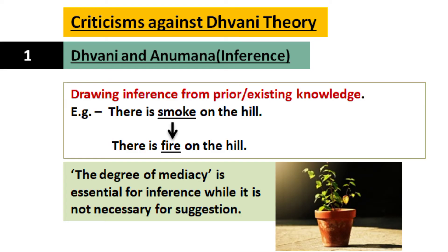Let's go through the criticisms put against the Dhvani theory. First: Dhvani and Anumana or inference. Anumana means drawing inference from prior or existing knowledge. For example, from the sentence 'there is smoke on the hill,' our previous experience tells us that where there is smoke there is fire, so we infer there is fire on the hill. The criticism is that Dhvani is just the same as Anumana. However, Anumana requires a middle term — a degree of mediacy — whereas in the case of Dhvani or suggestion, the degree of mediacy is not required. Thus Dhvani is different from Anumana.